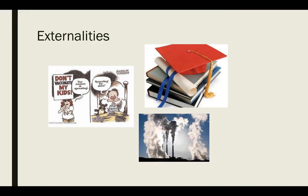A negative externality is an external cost — pollution, noise pollution, air pollution, anything like that — that a third party has to bear the cost of but doesn't have anything in the transaction. A positive externality is when a third party gets a benefit. The thing on the left is talking about vaccinations — the fact that we vaccinate our children is a benefit to everyone walking around because we're not spreading diseases. Education is also an example of a positive externality.